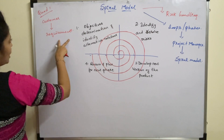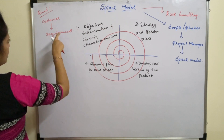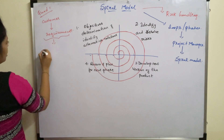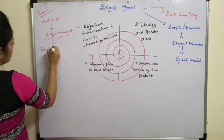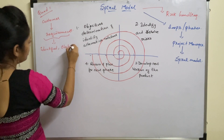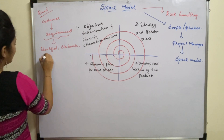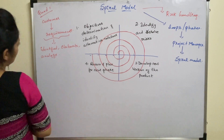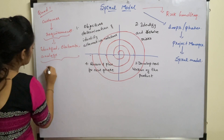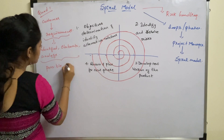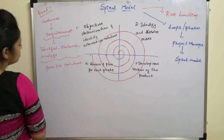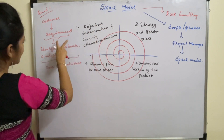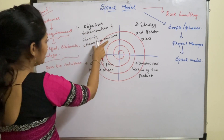How are the requirements gathered? Communication takes place between the customer and the developer, and the developer gathers requirements from the customer. These requirements are then identified, elaborated, and analyzed in order to find possible solutions. You need to find multiple possible solutions for the project. This involves objectives determination — finding out the objective of the project and identifying multiple solutions.